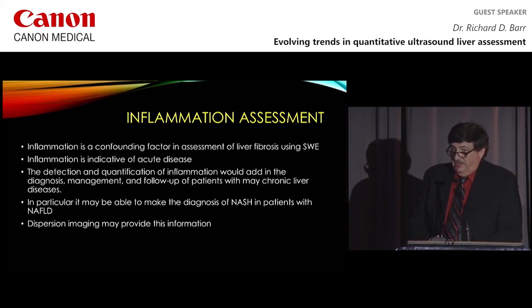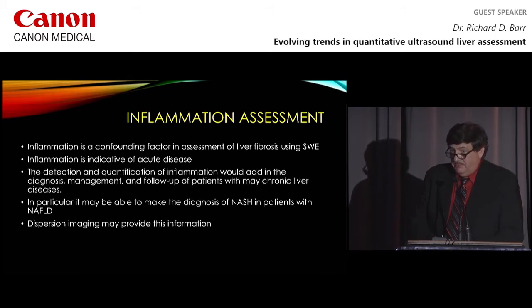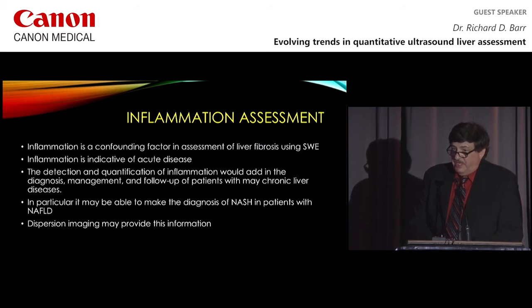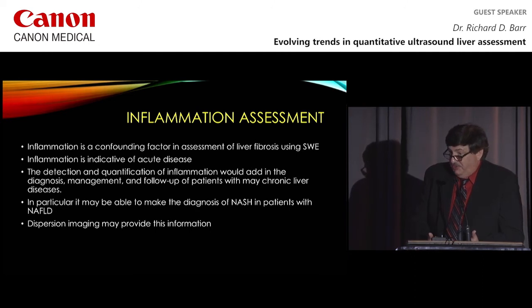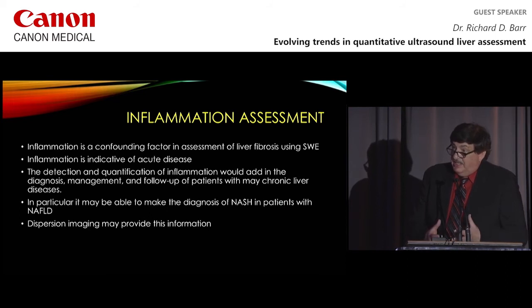The third thing we want to know is inflammation. Inflammation is a confounding factor in the assessment of fibrosis. We can look at liver enzymes — if they're very high, we know there's a significant change — but we don't know if smaller values are also affecting these measurements. Inflammation is an indication of acute disease, and its detection and quantification would add to the diagnosis, management, and follow-up of patients with chronic liver disease. When we treat patients for hepatitis C, we often see a rapid drop in liver stiffness value, which is resolution of the inflammation, followed by slower regression over time representing the resolution of fibrosis. Dispersion, as Dr. Sugimoto talked about, may be able to provide us this inflammation signal.